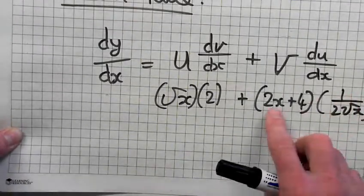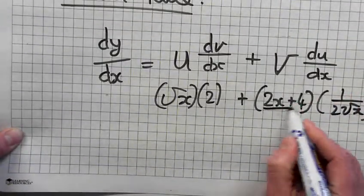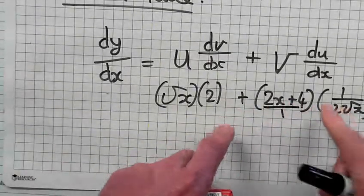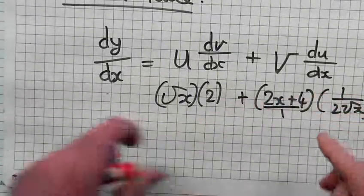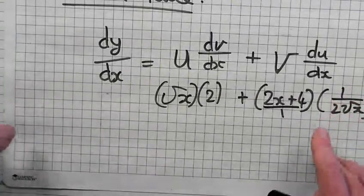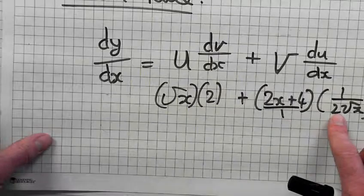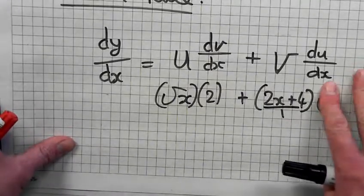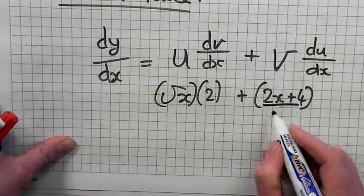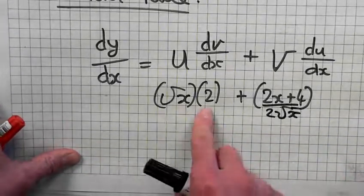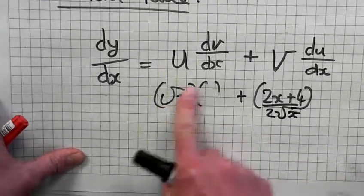When I multiply, remember, 2x plus 4 is the same as 2x plus 4 over 1. So when I multiply these two, it's 1 times 2x plus 4, which is 2x plus 4. And 1 times, on the bottom, 1 times 2 root of x. So it's 2 root of x. On the bottom, if I multiply these two, it's 2 root of x.